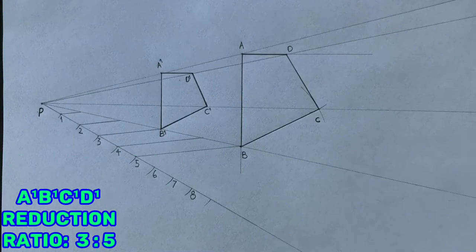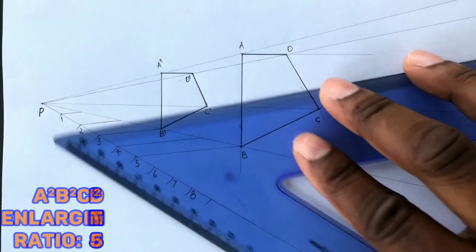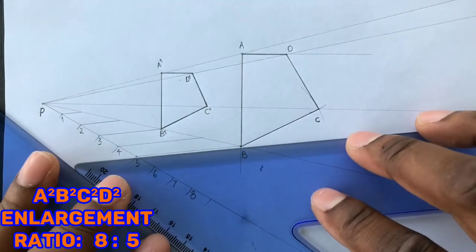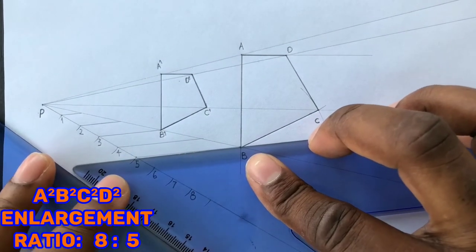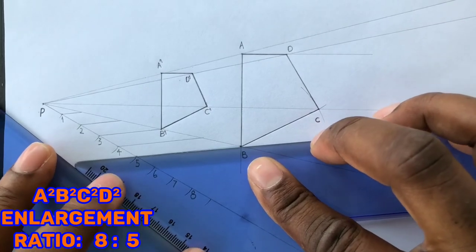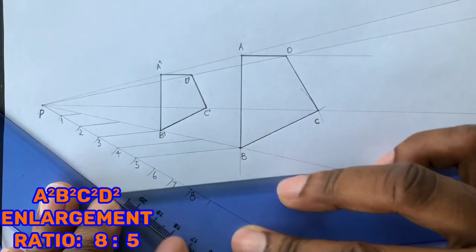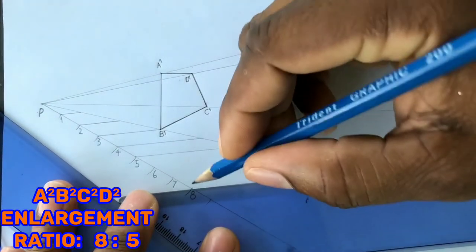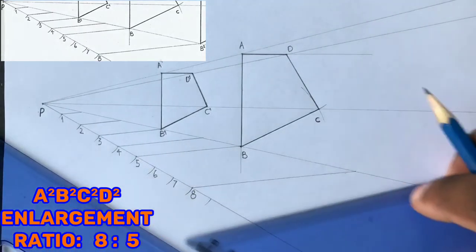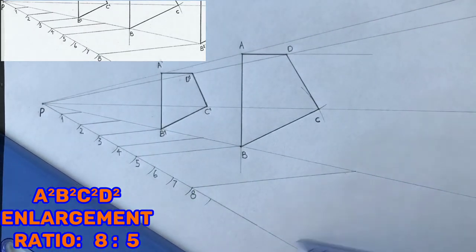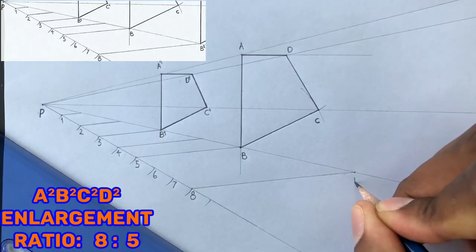Now in order to enlarge ABCD to a given ratio of 8 to 5, draw a parallel line to line 5B at point 8. Use your two set squares to draw this parallel line. This line intersected the line extending from point B. Label this intersection as B2.